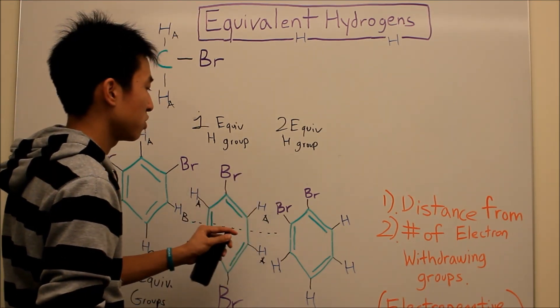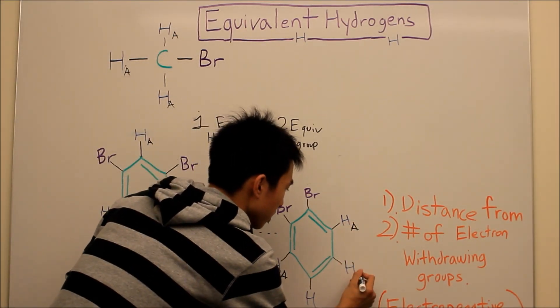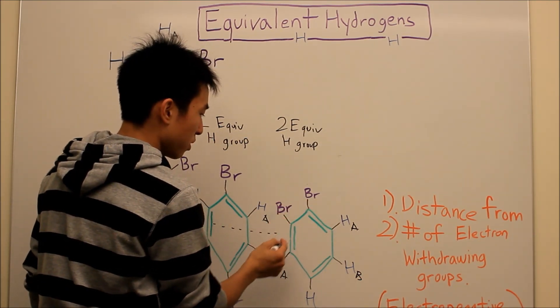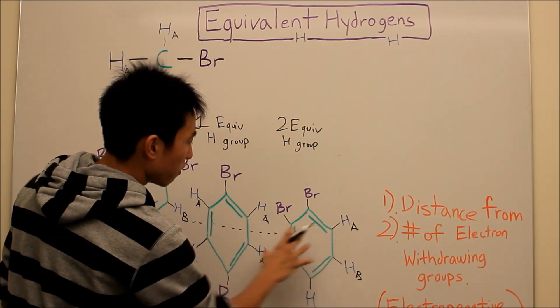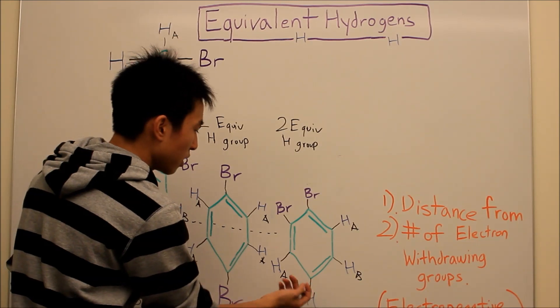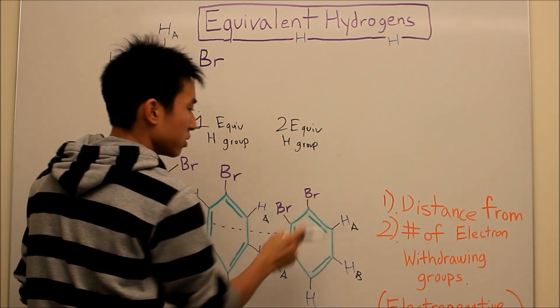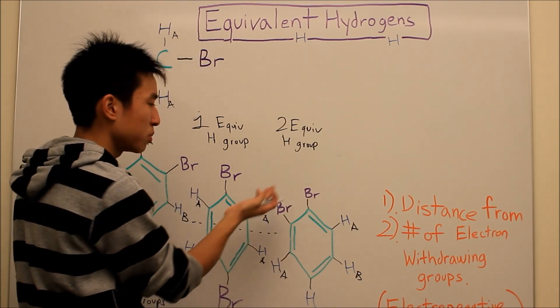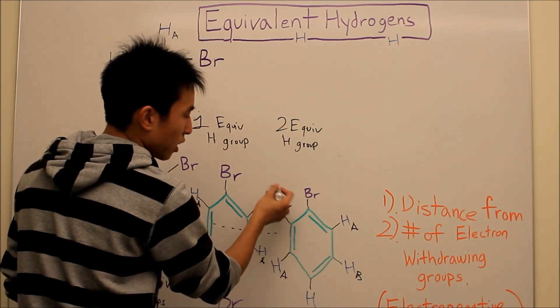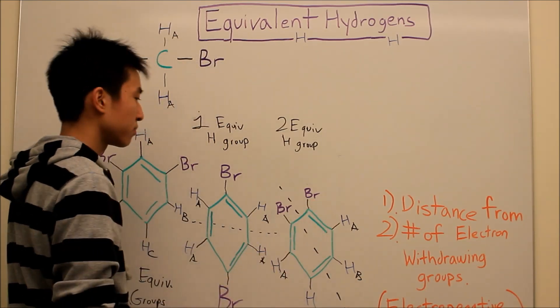Last one here, two equivalent hydrogen groups. So these are two groups, Ha, Hb, Hb. Because once again, one bond, two bond, three bond, one bond, two bond, three bond, and then their environments are basically like the same, so they're equivalent hydrogens. And then Hb, one bond, two bond, three bonds, four bonds away, one bond, two bond, three bonds, four bonds away, so they're the same distance away from electronegative groups here, bromine, bromine, and their environments look the same. There's also like another element of symmetry that you can kind of see here. We cut it in half of this.